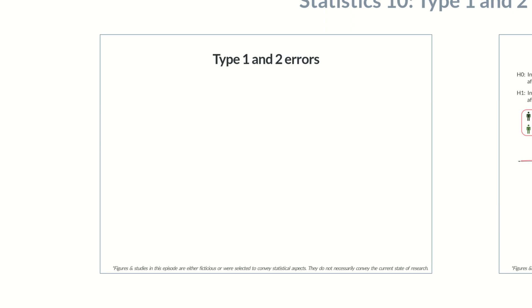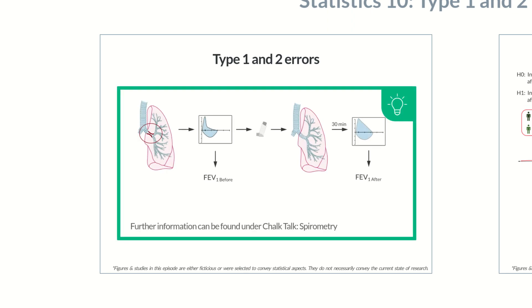Let's illustrate this using an example from our last episode. A fictional study analyzed a new drug for patients with asthma. To assess its efficacy in managing bronchodilation, the patient's FEV1 value was measured by pulmonary function testing before and 30 minutes after administration of the drug.